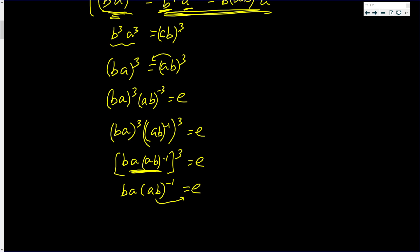So we have that ba(ab⁻¹) = e. Bringing this to the other side, we have ba = ab.